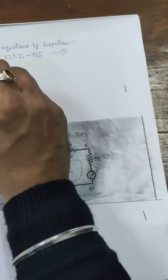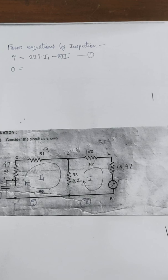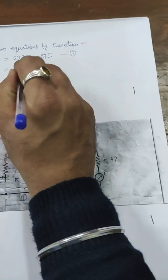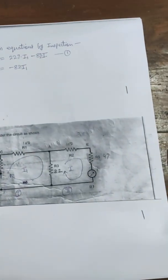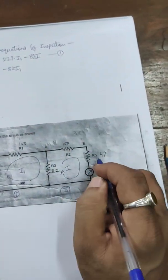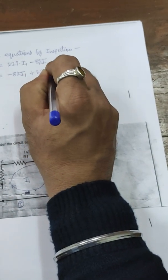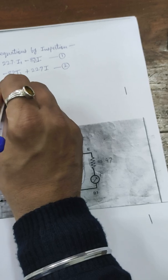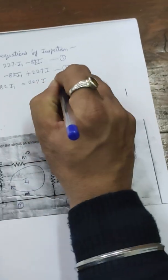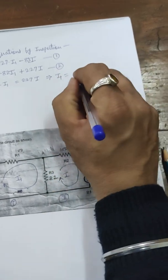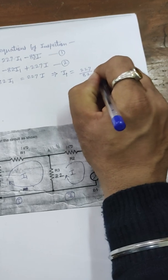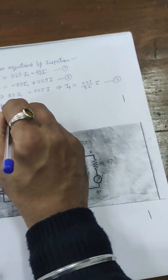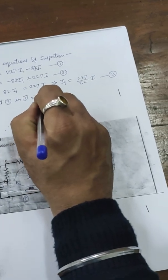For the other loop, there is no source present so it equals zero. Equation 2 is: 0 = −82·I1 + 227·I. Rearranging, we get 82·I1 = 227·I, which implies I1 = (227/82)·I. Let us call this equation 3. We can solve this using a calculator — substituting equation 3 into equation 1.